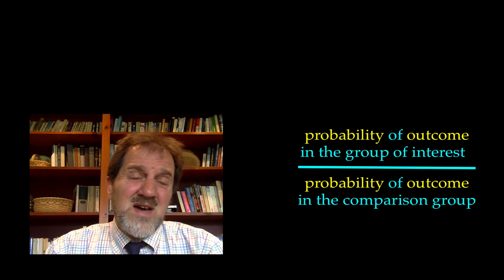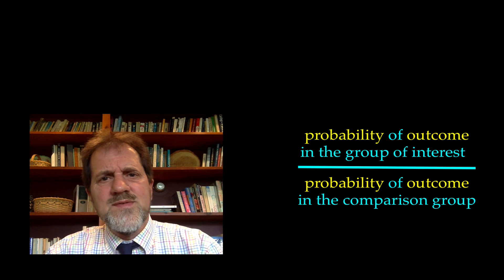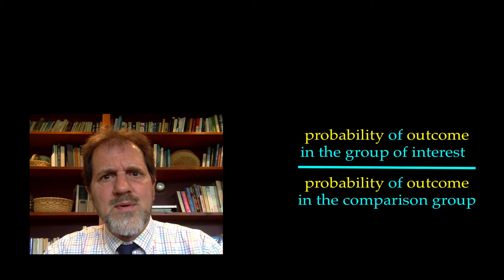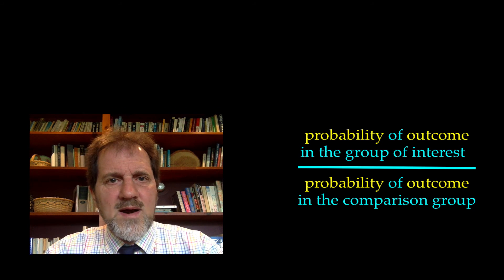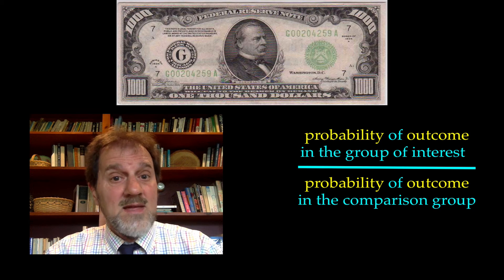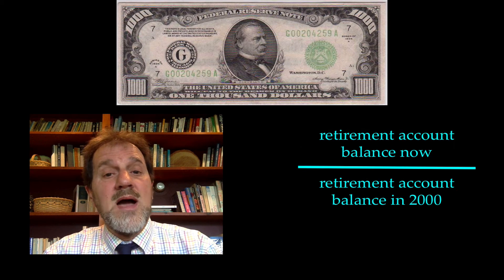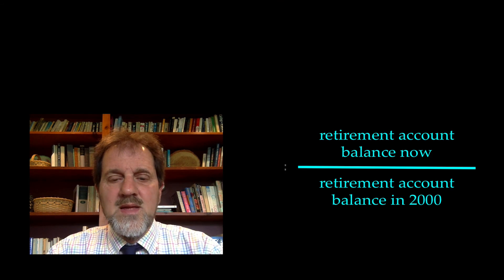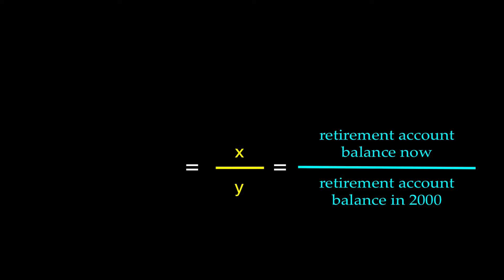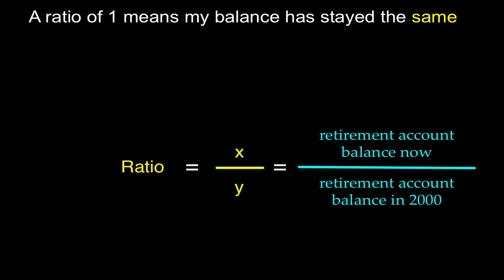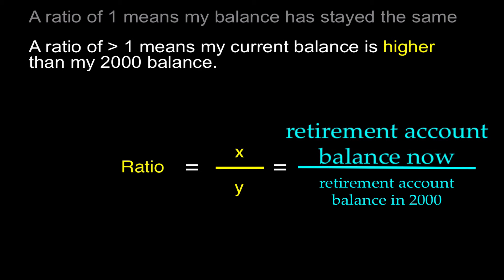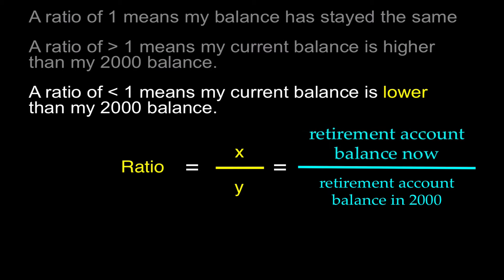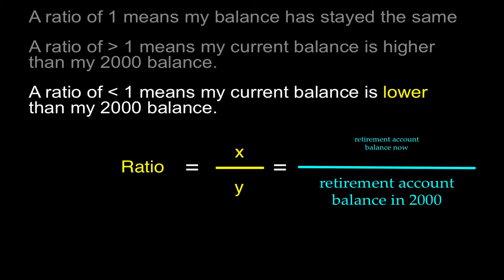Now, probabilities can involve a lot of numbers, like the five-year risk of heart attack being 2 per thousand. So let's work with a simpler quantity — money. Let's consider my retirement account balance now versus my retirement account balance in 2000. A ratio of 1 means my balance has stayed the same. A ratio greater than 1 means my current balance is higher, and a ratio less than 1 means my current balance is lower than my 2000 balance.